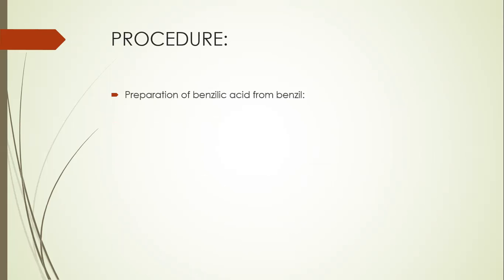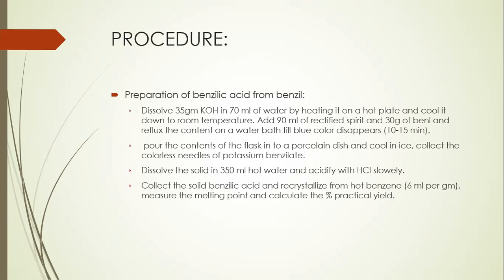For the second step of the procedure, 35 grams of potassium hydroxide with 70 ml of water are taken and the mixture is heated on a hot plate. After cooling it down, 90 ml of rectified spirit and 30 grams of benzyl obtained from the first step are added to it and refluxed for 15 to 20 minutes till the blue color of the solution disappears. Ice cold water is added to give colorless needles of the potassium benzylate, which are further dissolved in hot water and acidified using hydrochloric acid slowly to give the precipitates of benzylic acid. Benzylic acid is recrystallized using benzene.